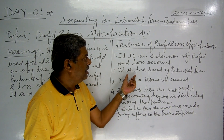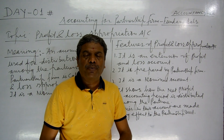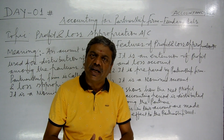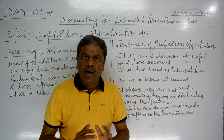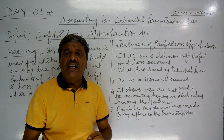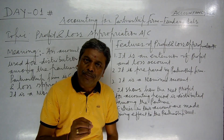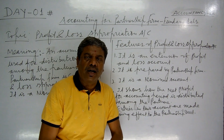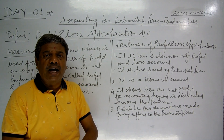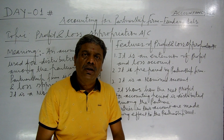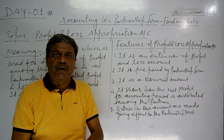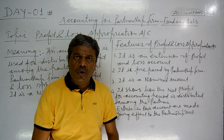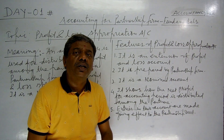Number two: it is prepared by a partnership form. Number three: it is a nominal account. As we know, when we talk about accounts in business, we can classify them into three groups — Personal, Real, and Nominal. So the Profit and Loss Appropriation Account is a nominal account.